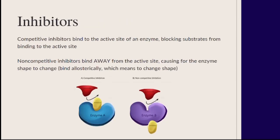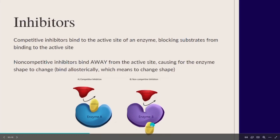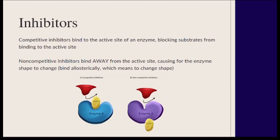For the exam, there are two types of inhibitors. The first is a competitive inhibitor, which binds to the active site — both the substrate and inhibitor have the same induced fit. The second is a non-competitive inhibitor, which can't bind at the active site but binds allosterically, causing the enzyme to change shape and preventing the substrate from binding.